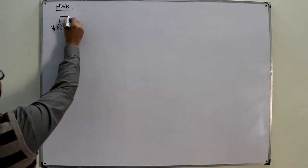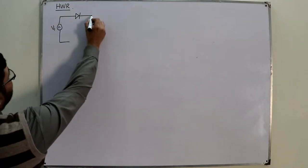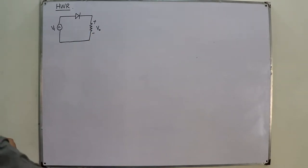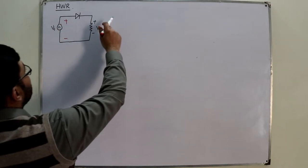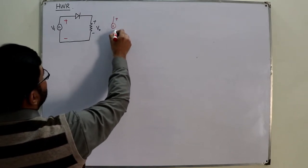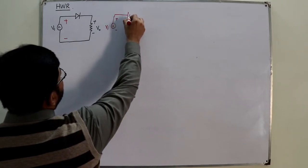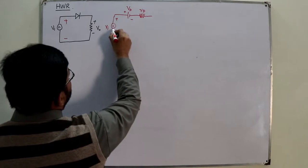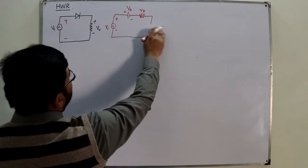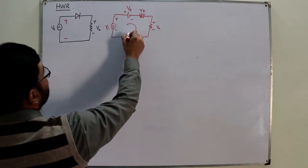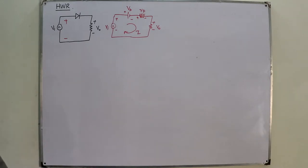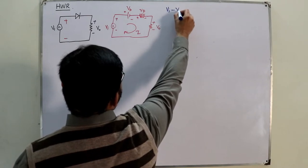The half wave rectifier has a sinusoidal input, a diode, and the output taken across resistor R_L with polarity v_output. In the positive half cycle, the polarity is plus to minus. We include the barrier potential and the diode resistance R_d, along with the output resistor. When current i flows, a voltage drop also occurs across R_d.